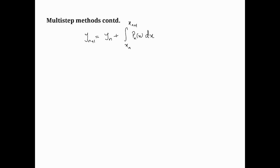So in the previous video, we ended with the Adams-Bashforth explicit method. Here we're going to look at what we'll call the implicit methods.